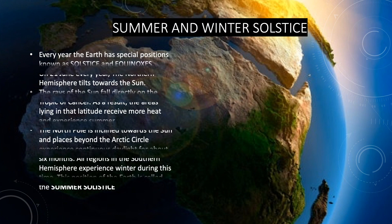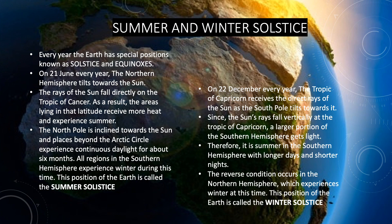Now let's talk about some special positions of the earth: solstice and equinox. We'll talk about summer and winter solstice first, and then discuss equinox. Every year, the earth has special positions known as solstices and equinoxes. On 21st June every year, the northern hemisphere tilts towards the sun. The rays of the sun fall directly on the Tropic of Cancer. As a result, the areas lying in that latitude receive more heat and experience summer.